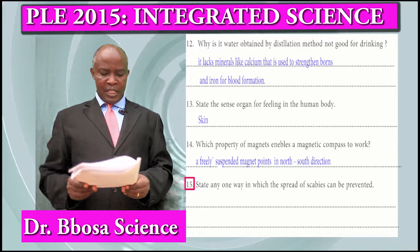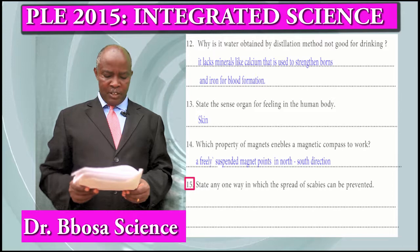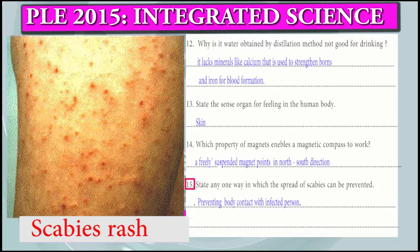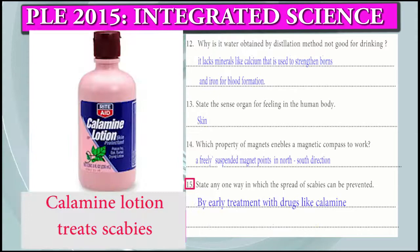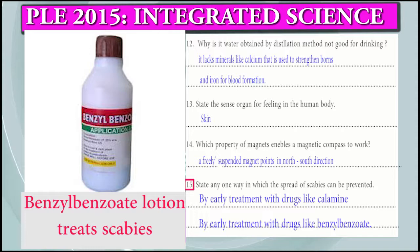Question 15: State one way in which the spread of scabies may be prevented. Scabies is spread by contact, so it can be prevented by avoiding contact, by avoiding sharing clothes and combs, and by treatment with drugs like calamine and benzoate.